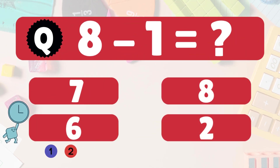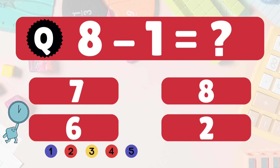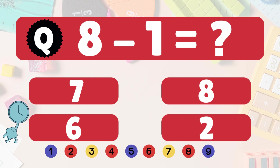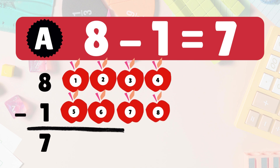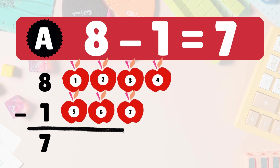Next: 8 minus 1 equals what? 8 minus 1 is 7. Here we have 8 apples. Take 1 away. 7 apples left: 1, 2, 3, 4, 5, 6, 7. So 8 minus 1 is 7.